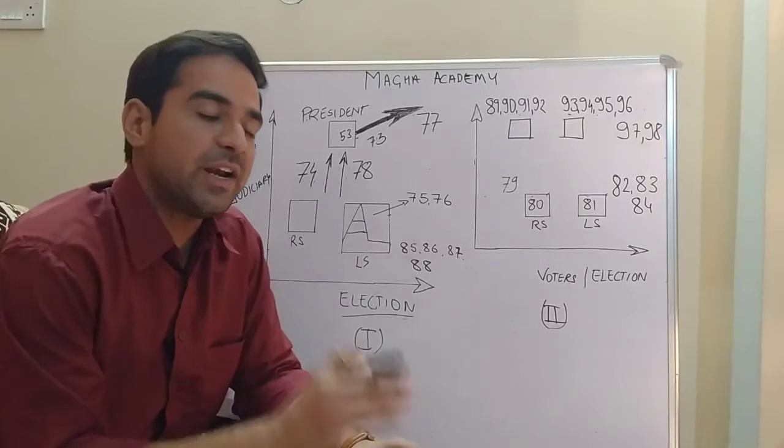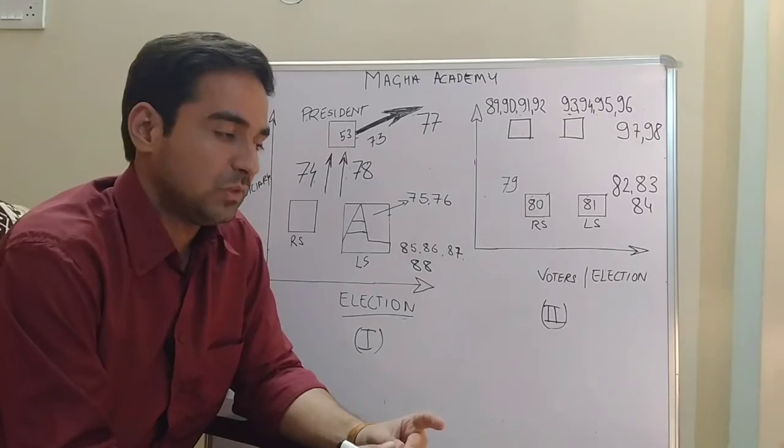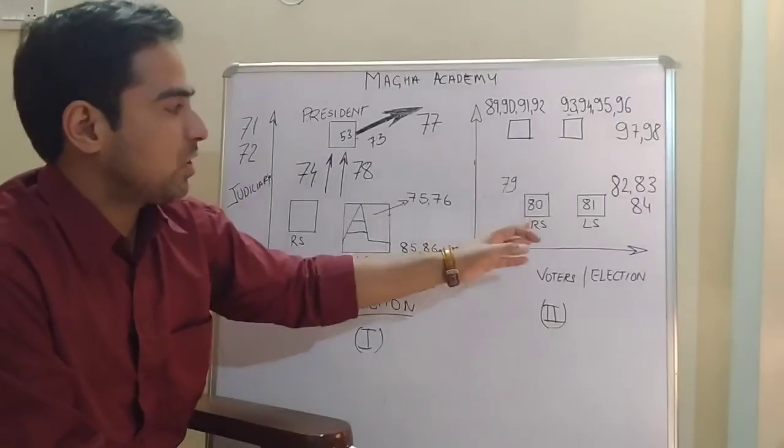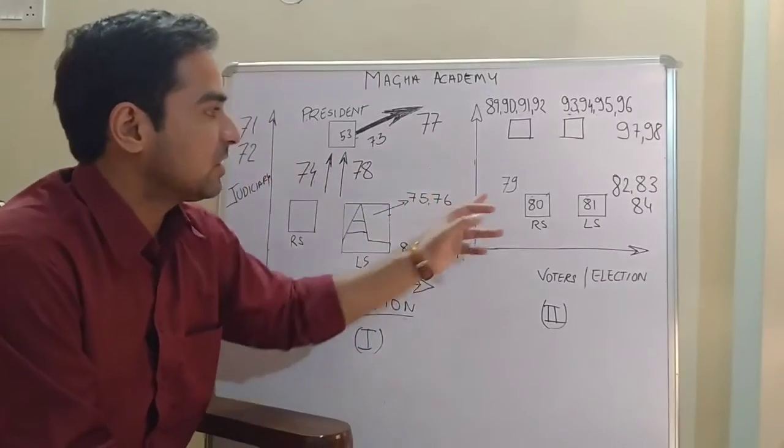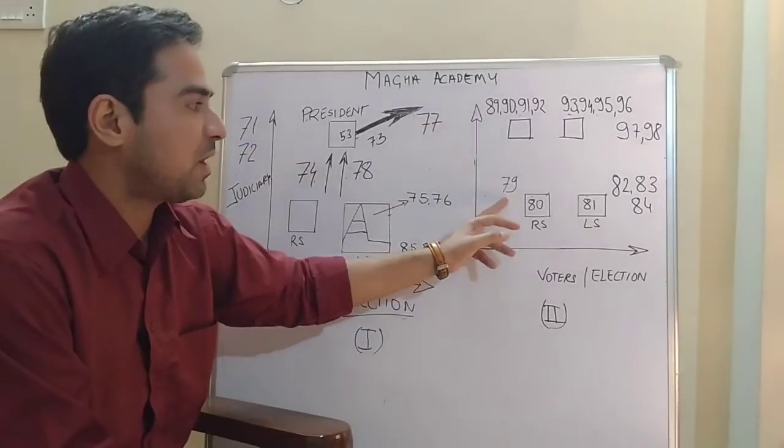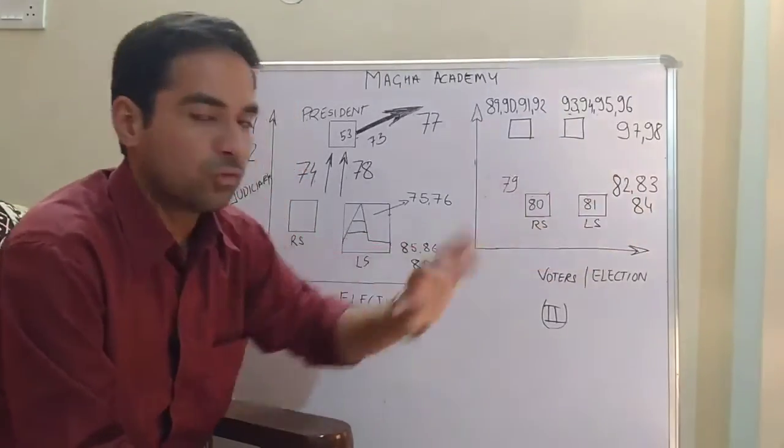What is Article 79? You have to think exactly in the same way. Article 79 is the Constitution of the Parliament. Articles 80, 81, 82, 83, 84 are for Rajya Sabha. Article 80 is composition of Rajya Sabha, Article 81 is composition of Lok Sabha.